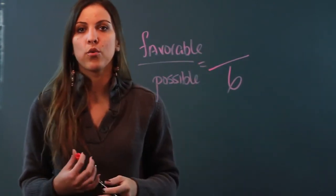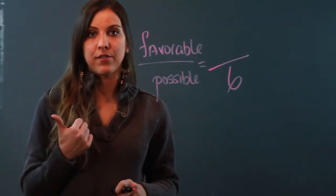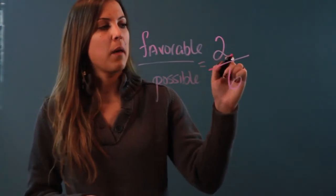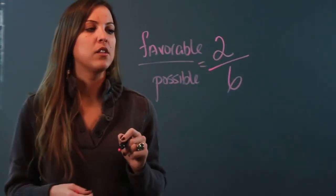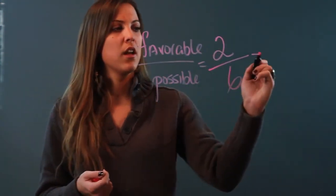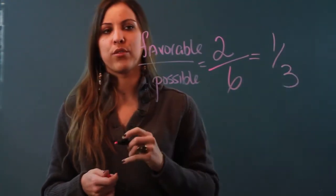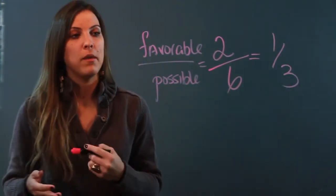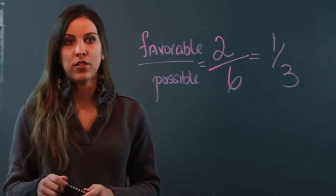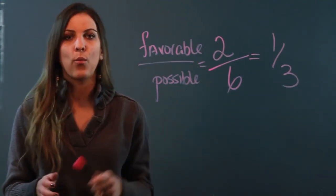So if I want a number greater than 4, I'm looking at either 5 or 6. That means I have 2 favorable outcomes. So that makes my probability 2 out of 6, which can be reduced, and I can rewrite that as 1 over 3. So the odds of rolling a 6-sided number cube and landing on a number greater than 4 is 2 out of 6, or reduced, 1 in 3.